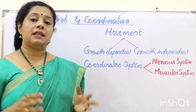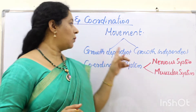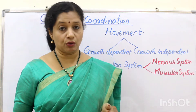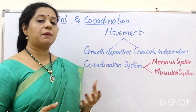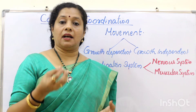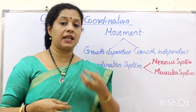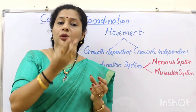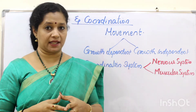These movements can be classified into two types. One is growth-dependent movement, meaning movement related to growth, which is mainly seen in plants — especially a seed germinating in the soil, the radicle and plumule coming out, later producing new features, or a bud blooming into a flower. All these are growth-related movements.